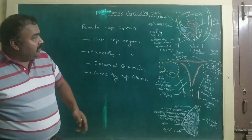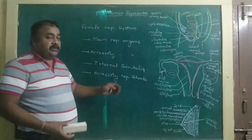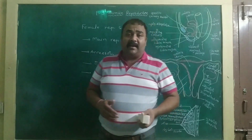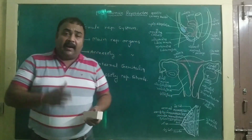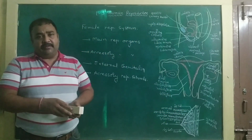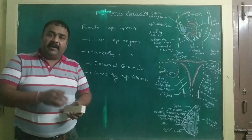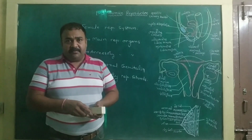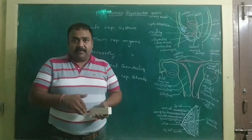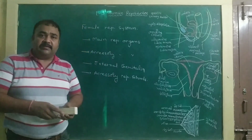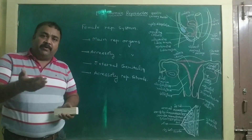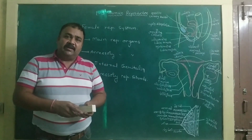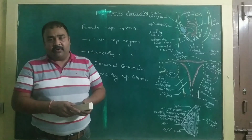All these structures together perform various kinds of activities like ovulation, fertilization, implantation, development of the fetus — that is embryo and fetal development — and lastly, delivery of the baby.